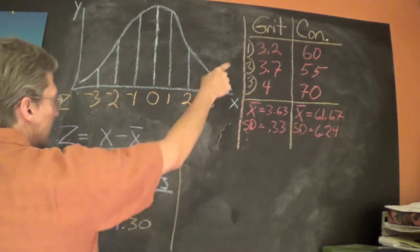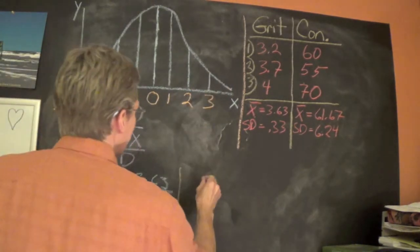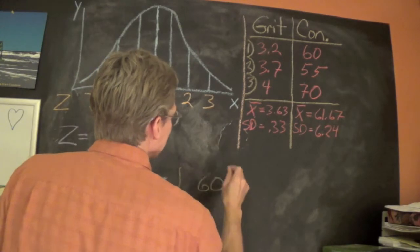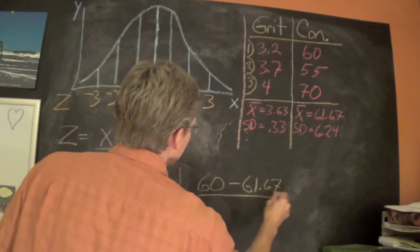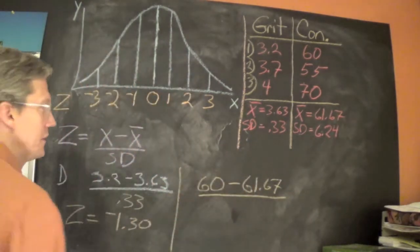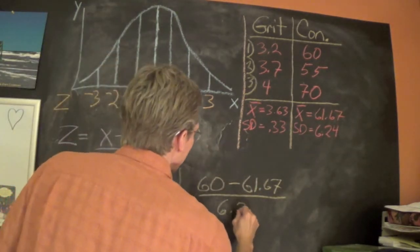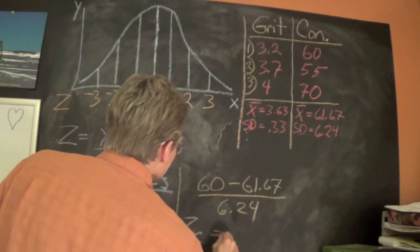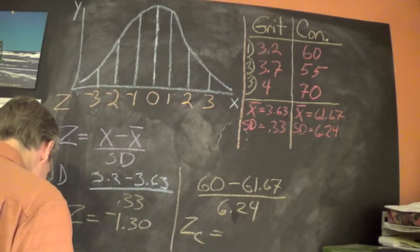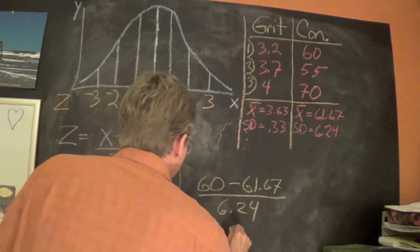So let's do this also for the conscientiousness. 60, the score, minus the mean 61.67, divided by the standard deviation 6.24. So the z for conscientiousness is equal to negative 0.27.